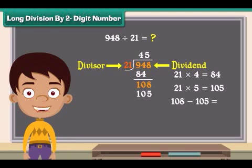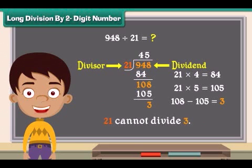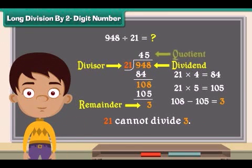Subtract 105 from 108. Answer is 3. 21 cannot divide 3. So 3 is the remainder and 45 is the quotient.